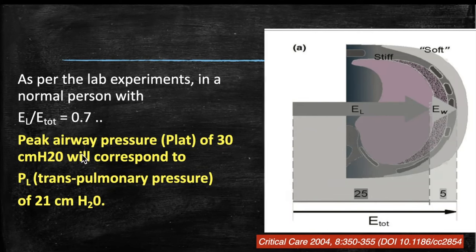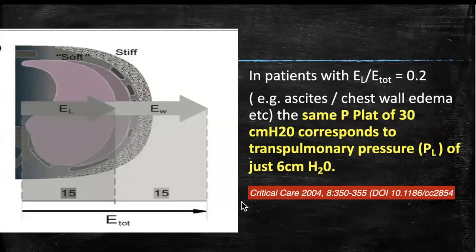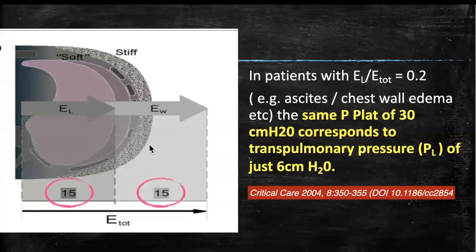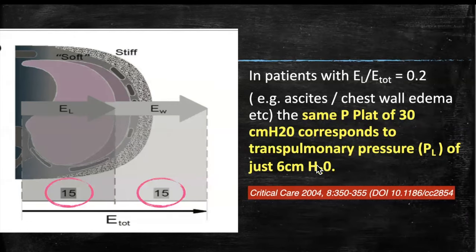But in a poor chest wall compliance situation — ascites or chest wall edema — applying the same 30 centimeters of airway plateau pressure means only 15 centimeters opens the lungs and 15 centimeters is wasted overcoming chest wall elastance, giving a trans-pulmonary pressure of around 6. The ventilator screen shows plateau pressure of 30, but the actual pressure opening the lungs is just 6 centimeters of water. That is the fallacy of using only airway pressure when chest wall compliance is poor.